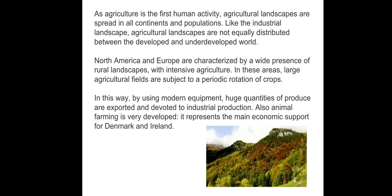North America and Europe are categorized by a wide presence of rural landscape with intensive agriculture. In these areas, large agriculture fields are subjected to periodic rotation of crops. By using modern equipment, huge quantities of produce are exported and devoted to industrial agricultural production. Animal farming is also very developed, representing the main economic support for Denmark and Ireland.